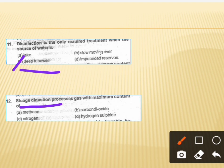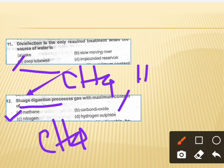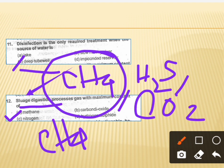The correct answer for the next question is option A, which is methane (CH4). In the sludge digestion process, three gases are produced: CH4, H2S, and CO2. The maximum content among these is CH4, which is the right answer for which gas is mainly evolved in sludge digestion.